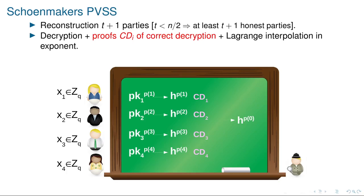To decrypt, we need t+1 honest parties, and we have those because we have an honest majority. The parties decrypt the shares — obtaining values h raised to the polynomial evaluations — and prove they computed these values correctly. Then anyone can combine these shares via Lagrange interpolation in the exponent to create h raised to the evaluation of the polynomial at zero, which is defined as the secret.